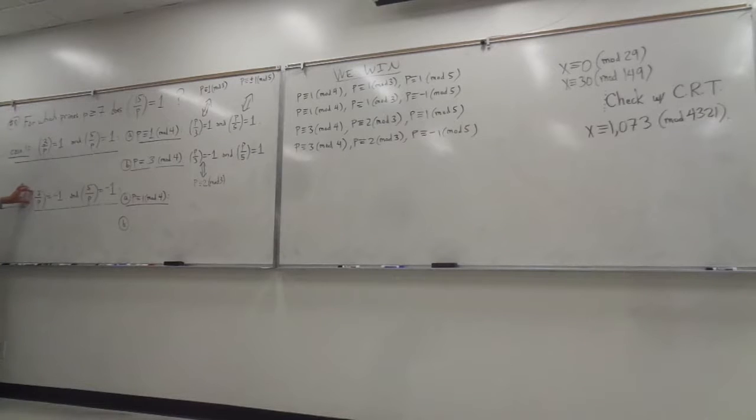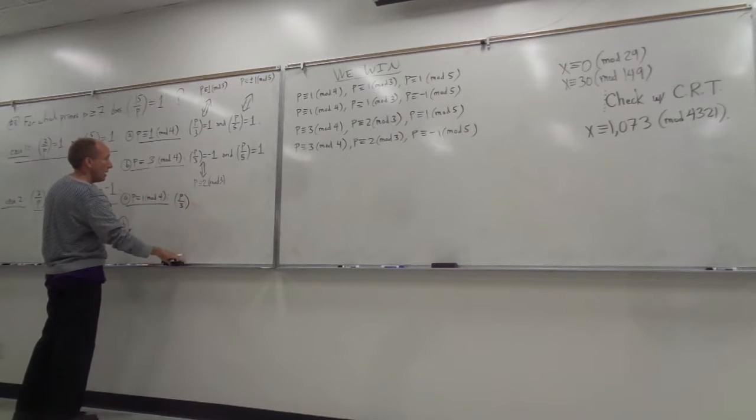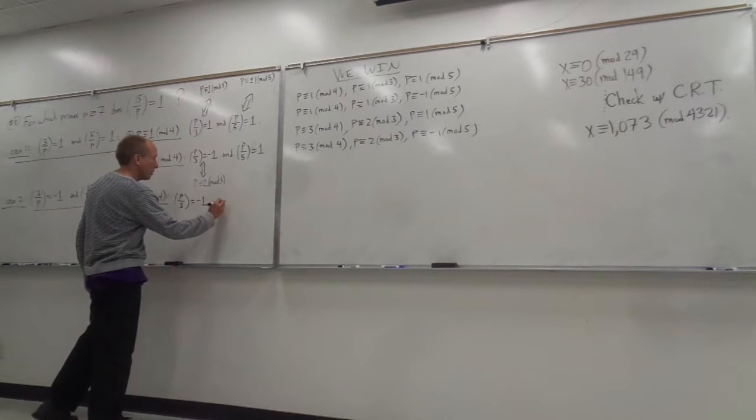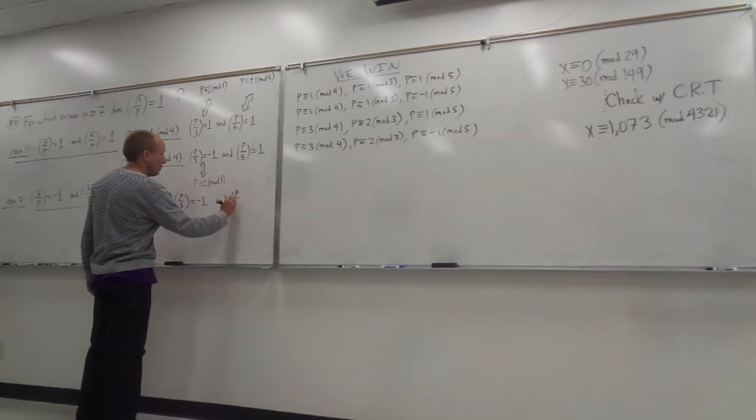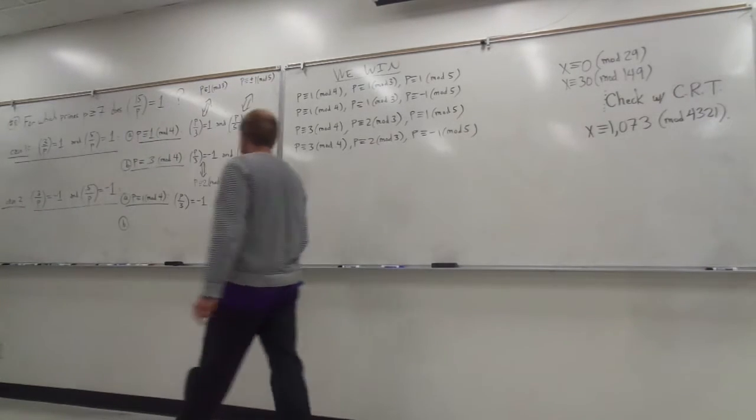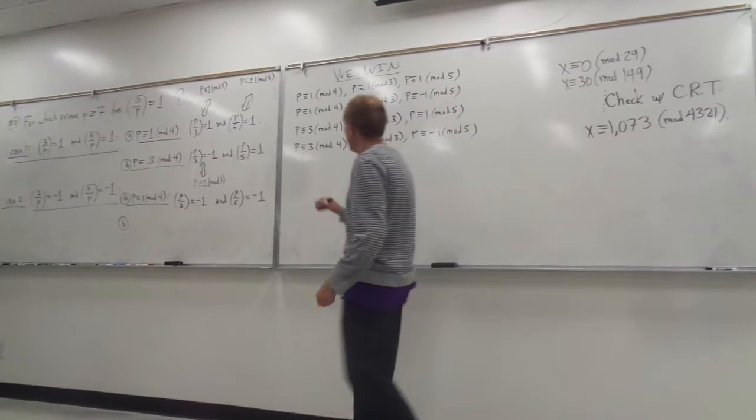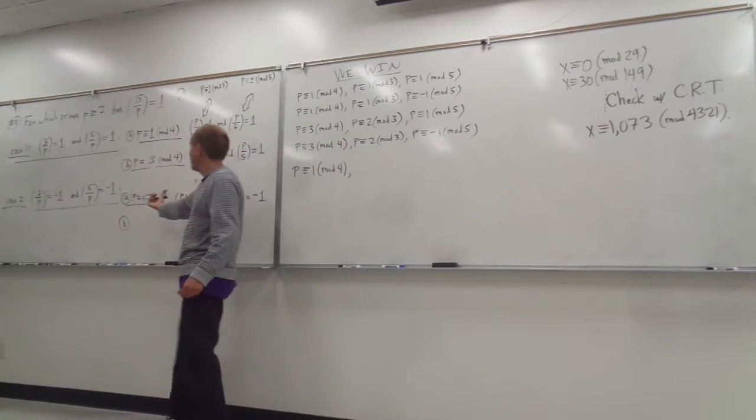So we're trying to get the Legendre symbol of 3 with respect to p to equal negative 1. Well, I can flip that over. And when I flip it over, I have to get a negative 1, there's no sign change on that, because the p is congruent to 1 mod 4. And we need the Legendre symbol of p with respect to 5 to also be negative 1. Okay, so let's think about what those cases would be. So what do we have? We have p congruent to 1 mod 4. That's the case we're in.